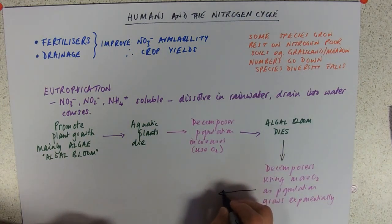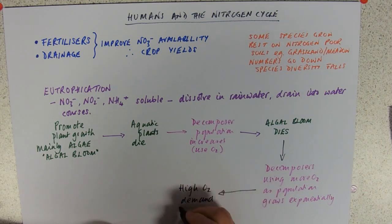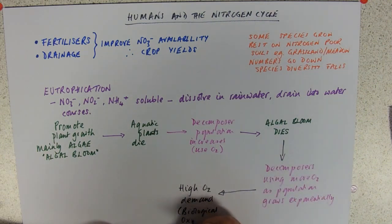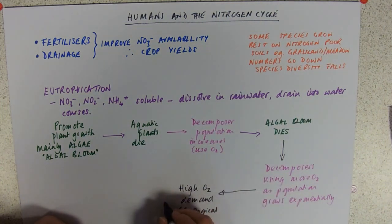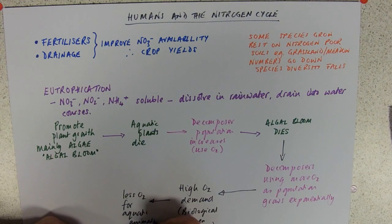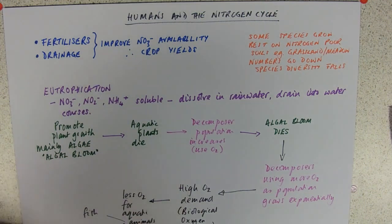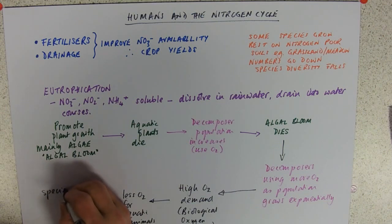Because decomposers are using up a lot of oxygen, we say there is a high oxygen demand. We call this the biological oxygen demand, or BOD. This means there is less oxygen in the water for aquatic animals — not just fish, but also the invertebrates — and therefore species diversity falls.